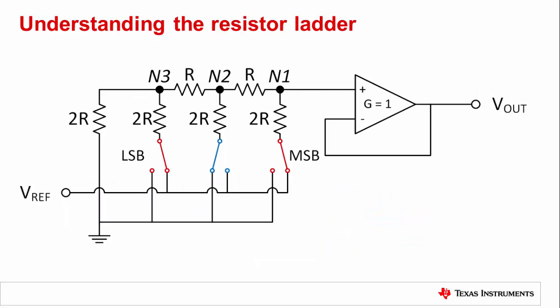Now let's develop an understanding of the R2R ladder and how binary weighting works. We will use the concepts of Thevenin equivalence and superposition to accomplish this. As we said before, applying the reference voltage to an arm will contribute a voltage to the DAC output. Let's take an example of a 3-bit R2R ladder and apply Thevenin equivalent circuits to learn the voltage contribution of each arm.